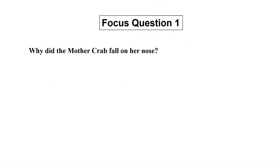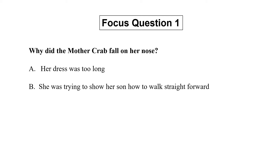Focus question 1: Why did the mother crab fall on her nose? A. Her dress was too long. B. She was trying to show her son how to walk straight forward. C. She tripped over a rock.